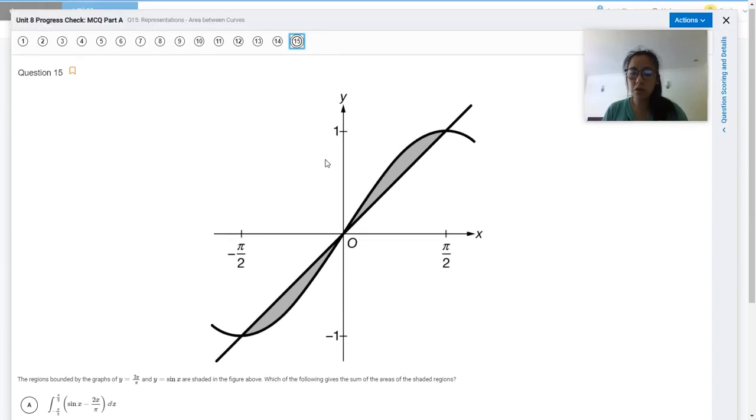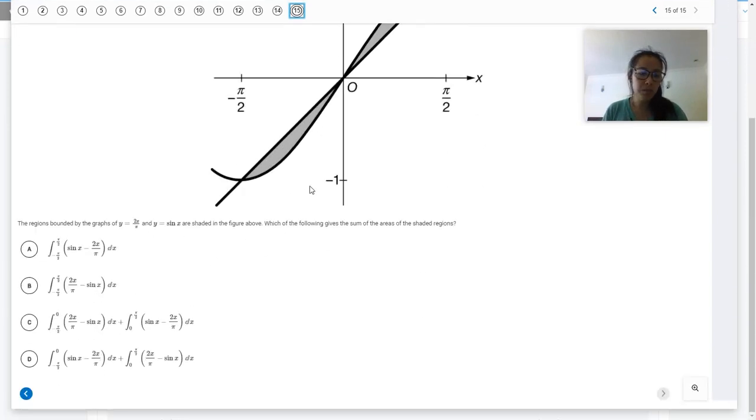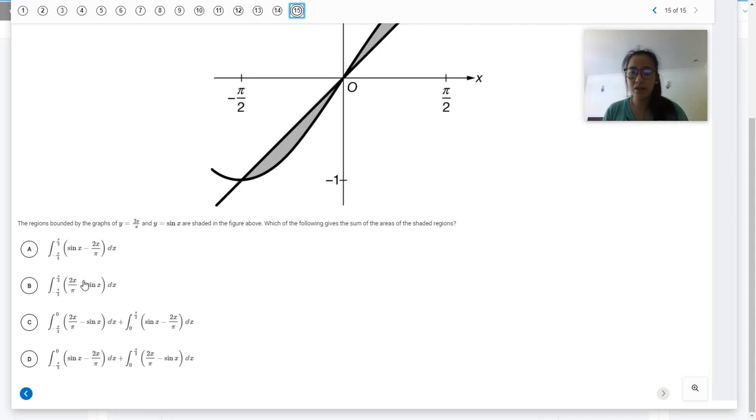So you can either do that or you can do the absolute value of the integrand, but you can see in answer choices there are no answer choices where they just take the absolute value of the integrand, so that's not going to be what they do here.